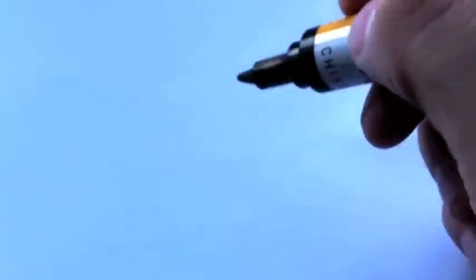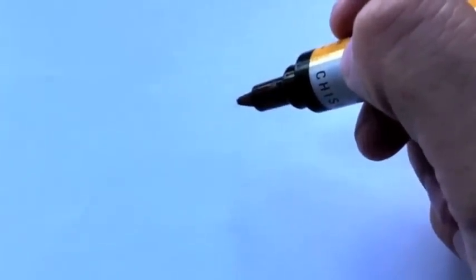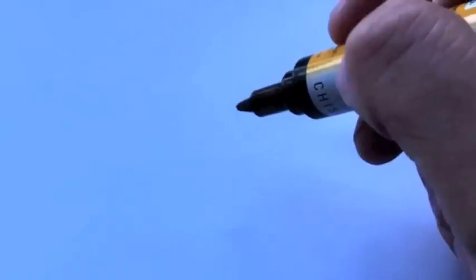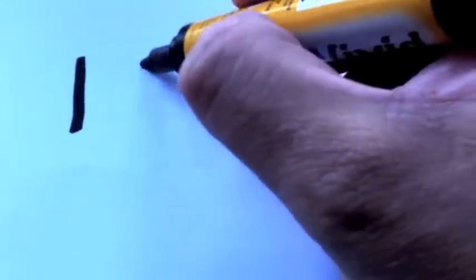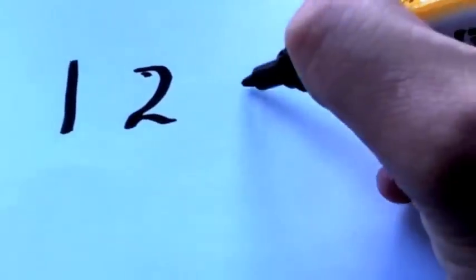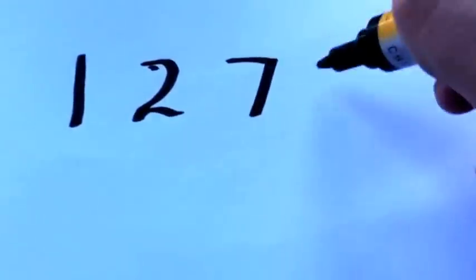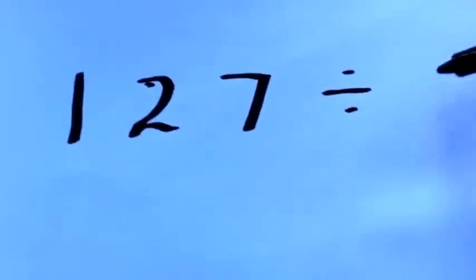Okay guys, so what we're going to learn about today is dividing using a written algorithm, but it's a shorter version. Just imagine your question was 127 divided by 5.